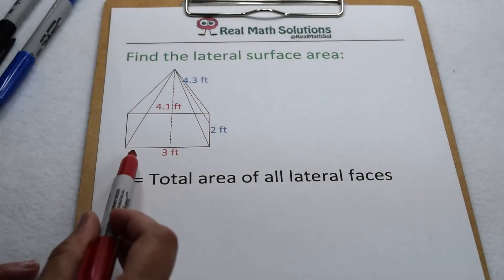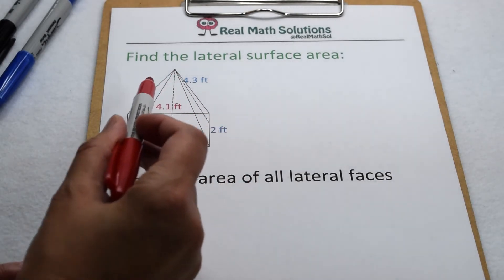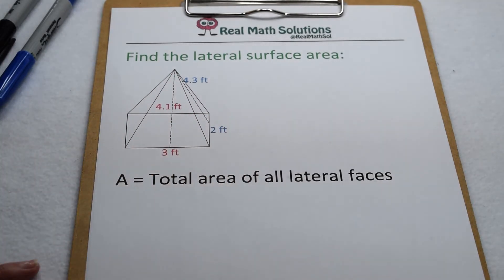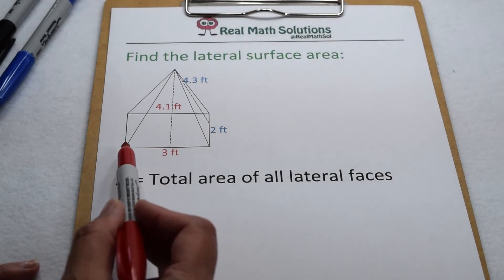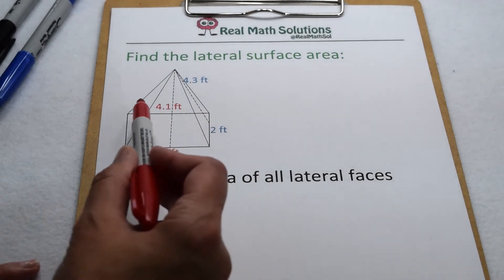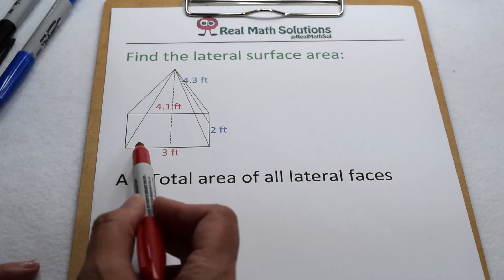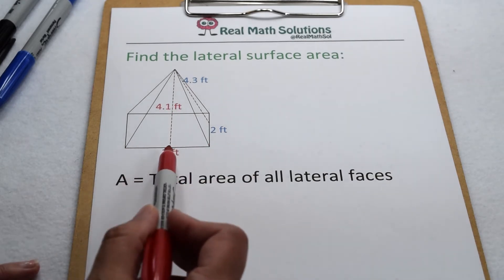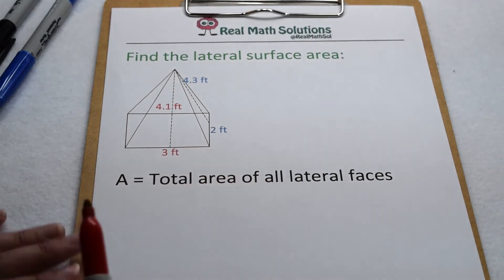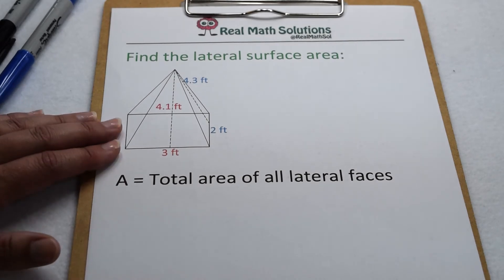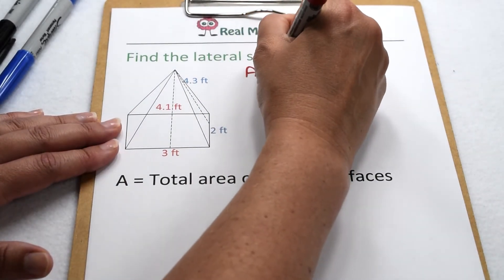If the base of our pyramid is not a regular polygon, then we have to find the area of each lateral face individually and add them together. Here we have a rectangular pyramid. That means for our rectangular base we're going to have two different types of lateral faces: the triangles along both lengths are congruent to each other, and the triangles along both widths are congruent to each other.